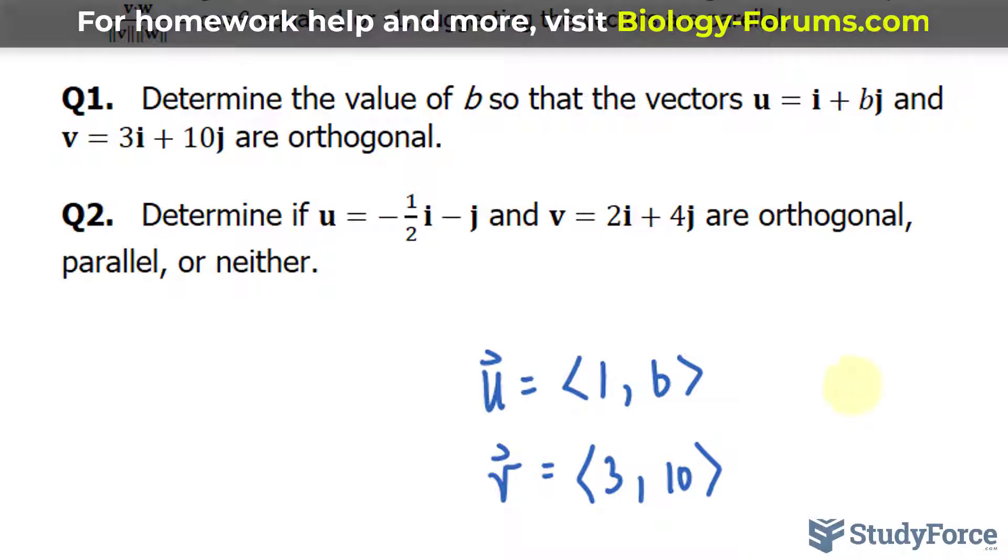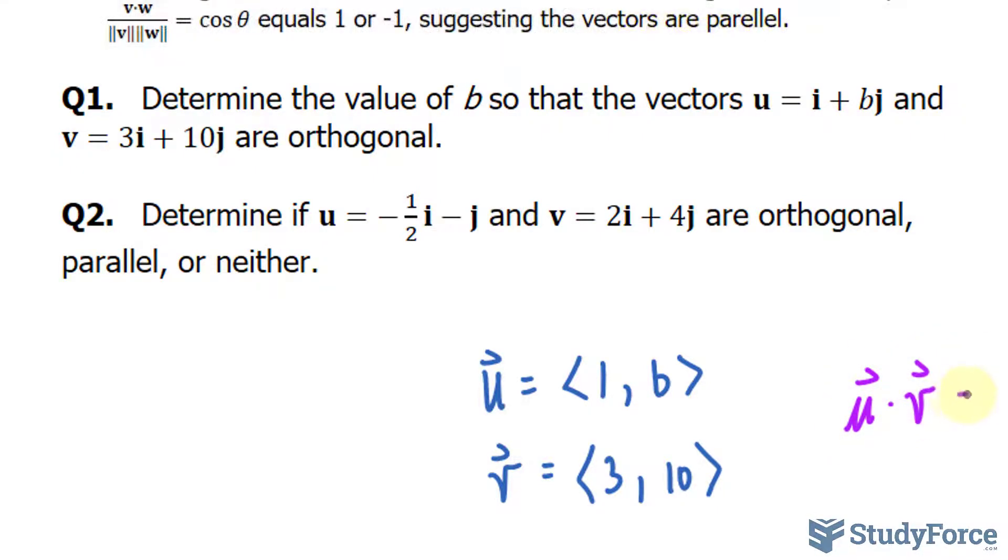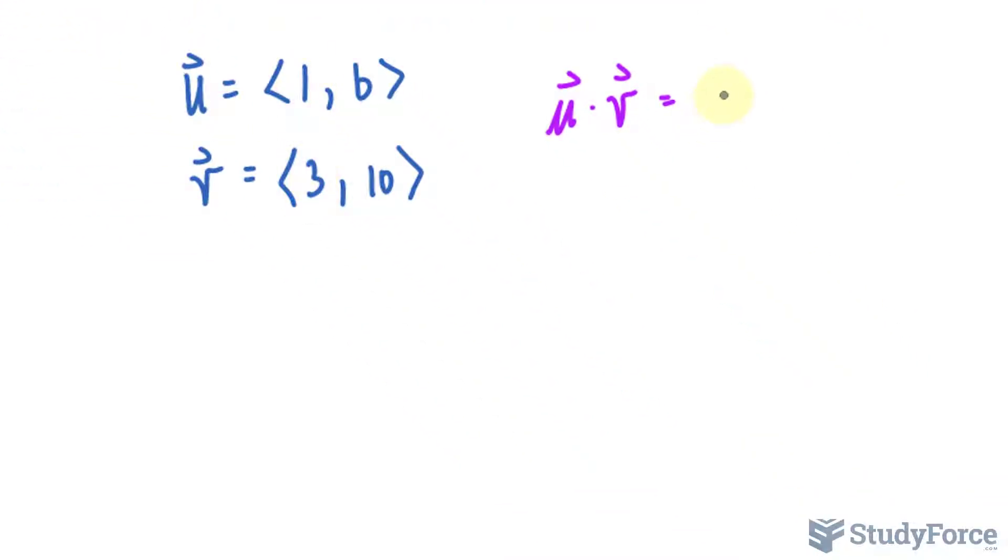To find the dot product of these two, what I will do is multiply the X components together, so 1 times 3, that's 3, and B times 10 is positive 10B.